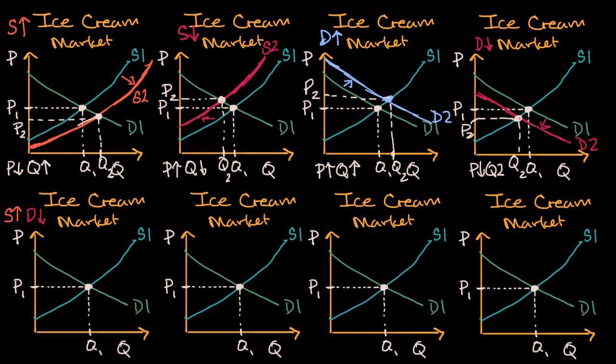Well, if the supply goes up, the supply curve is going to shift to the right, just like we saw up here. So our supply curve is going to shift like this. So this would be S2. It's going to shift to the right and down.